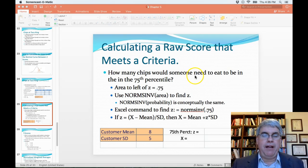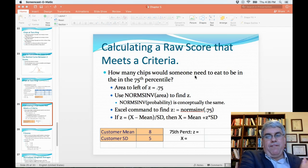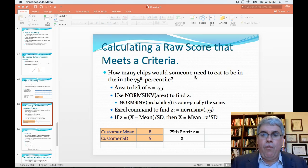And that would mean we would be wanting to find what z-score indicates that someone is higher than 75 percent of all the others, or that the area to the left of the z-score would be 75 percent or .75.